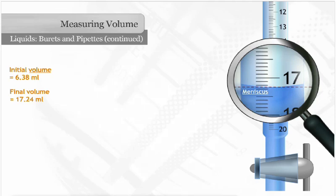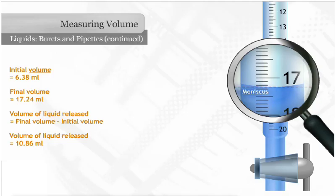To determine how much liquid was released, subtract the initial volume from the final volume. How much liquid was released from the burett? The correct answer is B, 10 and 86 hundredths milliliters.